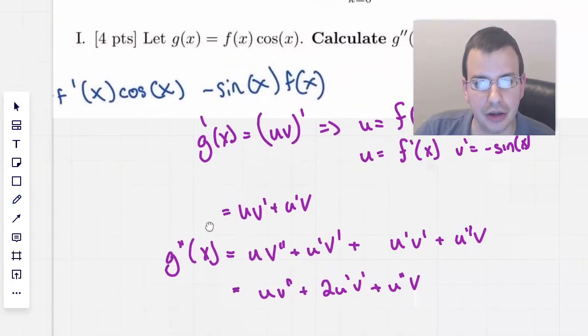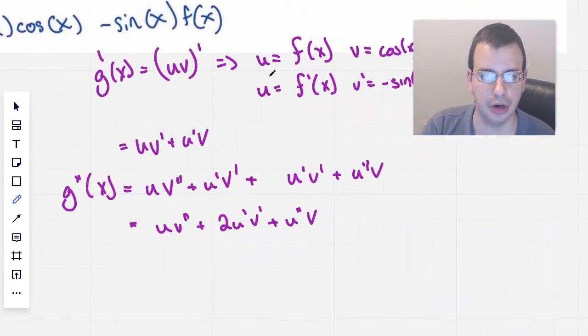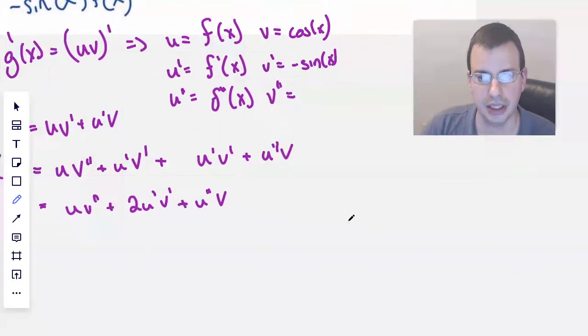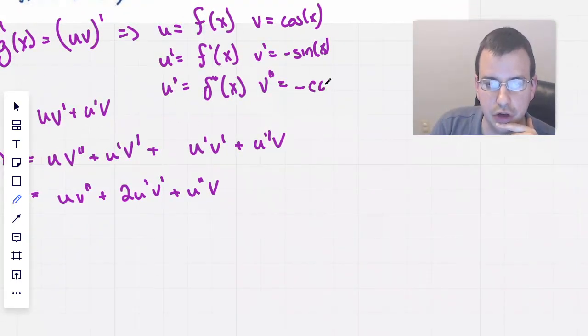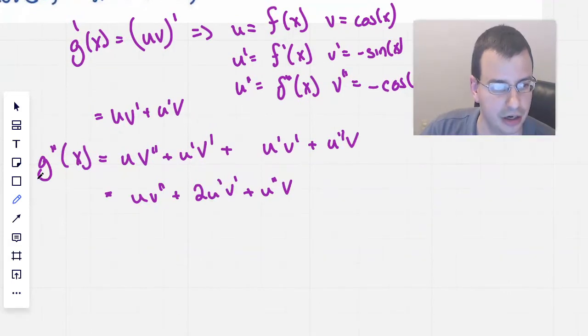So from here then, we need to find out what all these are. So u, we already got here, u prime, but we also need a u double prime, which will be f double prime of x. And we probably need a v double prime, which will be negative cosine of x. So now that we've got all that part of the way, we need to actually figure out what these f primes of x are.